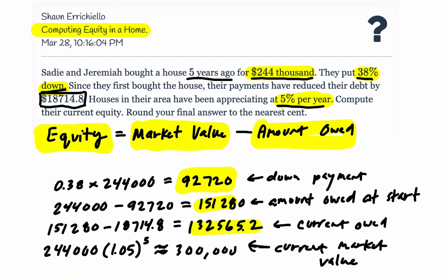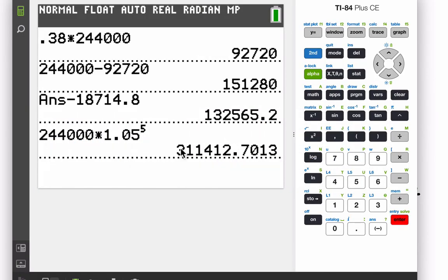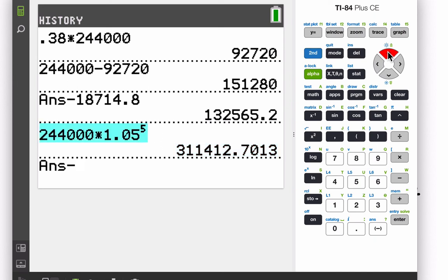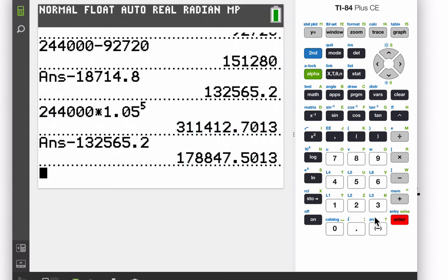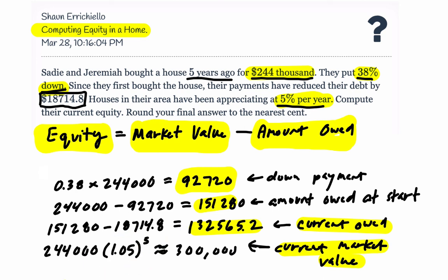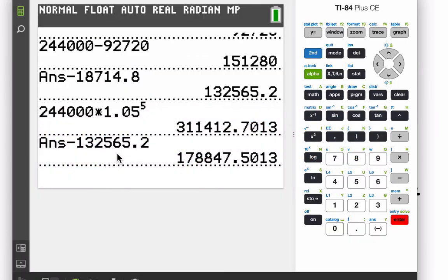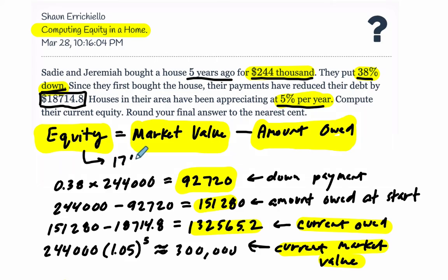Now let's apply our formula. To find equity, we take the current market value and subtract the amount owed. We have the current market value of approximately $311,412.70, and we subtract the current amount owed of $132,565.20. That gives us our equity: $178,847.50. So the current equity is $178,847.50, rounded to the nearest cent.